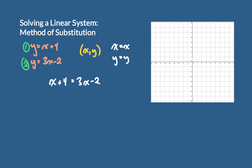We can say that x plus 4 equals 3x minus 2. What we've literally done is taken what y equals in the first equation and substituted it into y in the second one. We communicate this by writing: substituting 1 into 2. We've come up with an equation based on taking what y equals in the first and substituting it into the second. Now we have an equation with only one variable — only x's.